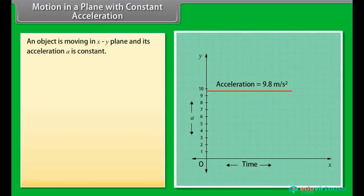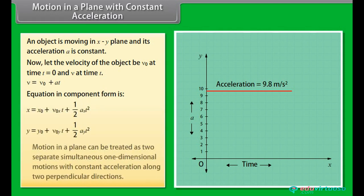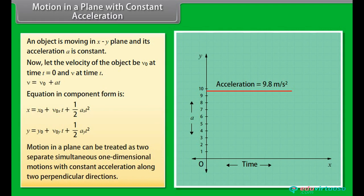Motion in a plane with constant acceleration. Let us take an example to understand. An object is moving in XY plane and its acceleration A is constant. Now, let the velocity of the object be nu naught at time T is equal to 0 and nu at time T. Nu is equal to nu naught plus AT. This is the equation in component form. We conclude that motion in a plane can be treated as two separate simultaneous one dimensional motions with constant acceleration along two perpendicular directions.